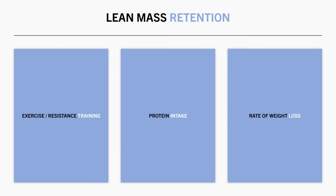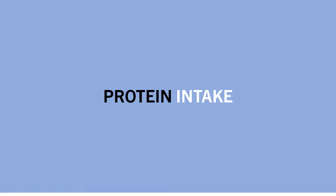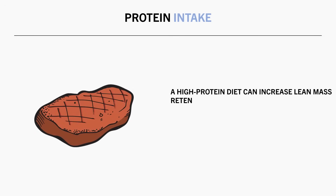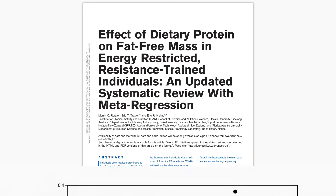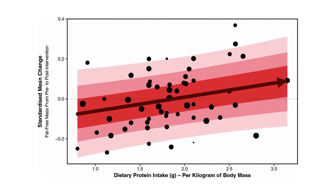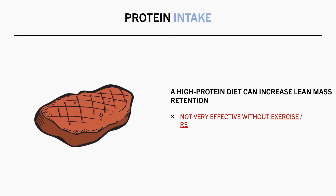The second strategy that can help with lean mass retention is protein intake. A high protein diet in conjunction with exercise can increase the amount of lean mass we retain during weight loss. This meta-regression looked at the influence of protein intake on lean mass retention during weight loss in interventions involving resistance training. It was found that higher protein intakes in conjunction with resistance training tend to enhance lean mass retention. However, a high protein intake alone isn't all that effective if exercise isn't being performed simultaneously. Rather, protein seems to play more of a complementary role, enhancing the magnitude of muscle growth or retention induced by exercise.